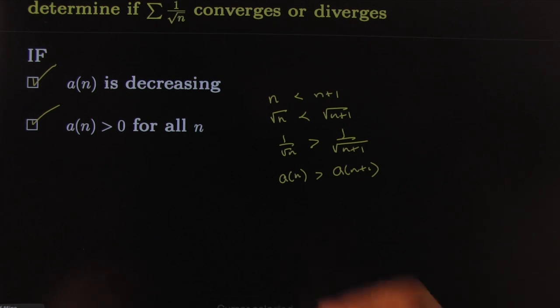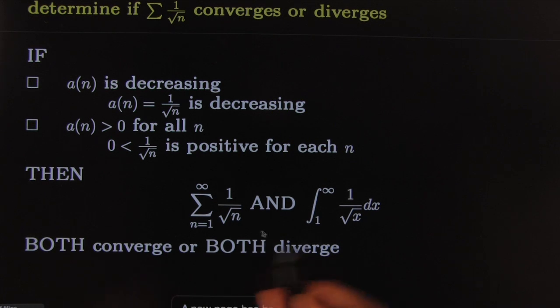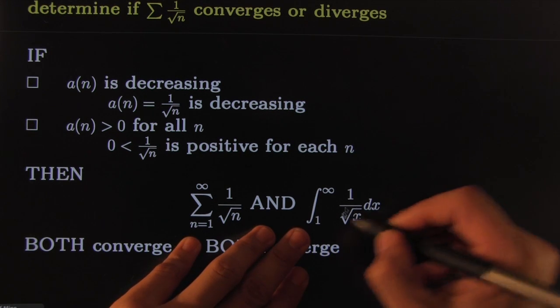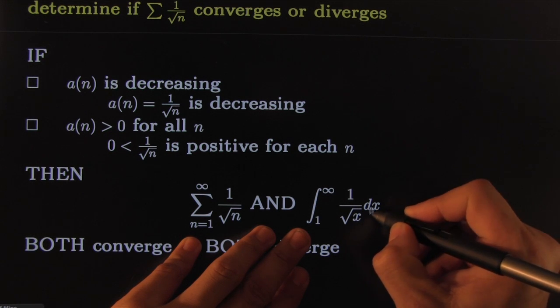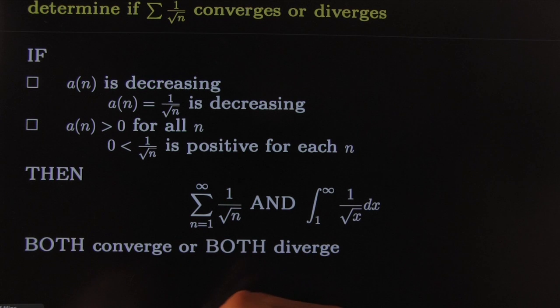You've checked your two items that guarantees that they both converge or both diverge. This is a p-integral where p is less than 1, so therefore it diverges. Or you can go on and you can actually do the integral here.